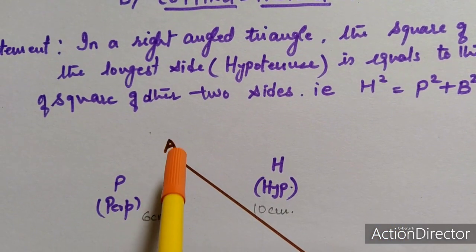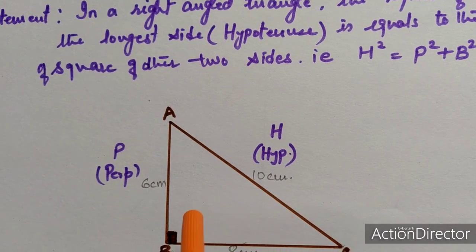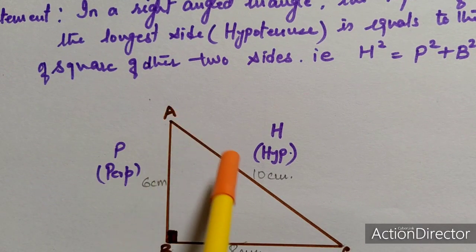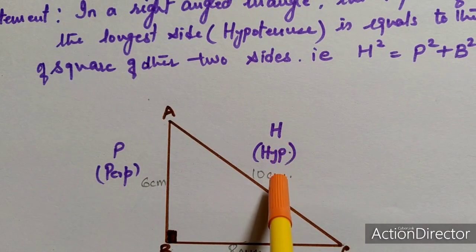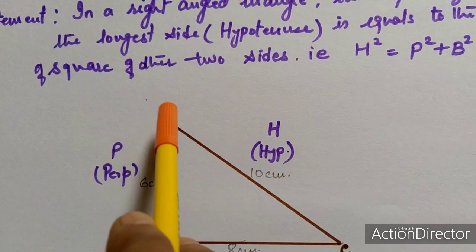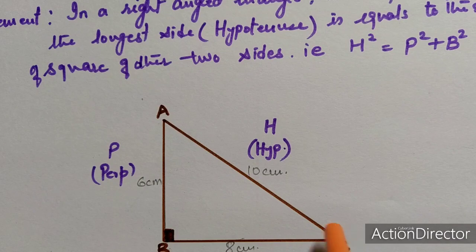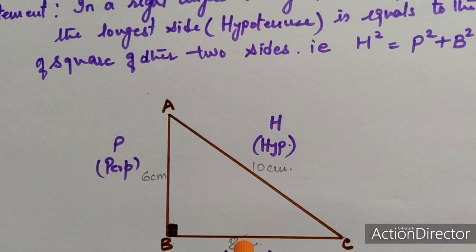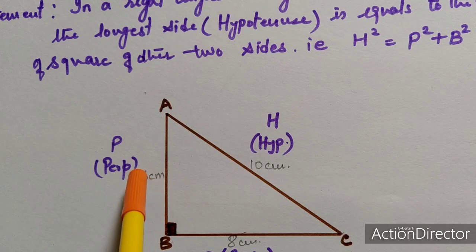So first of all we have to make one right angle triangle in which we have to show that the length of the hypotenuse is, let us suppose, 10 cm. Perpendicular is 6 cm and the base I have taken here as 8 cm. Either you can take this as perpendicular and this as base.